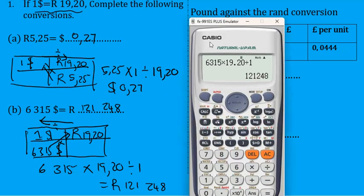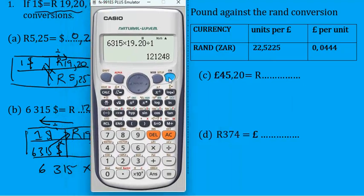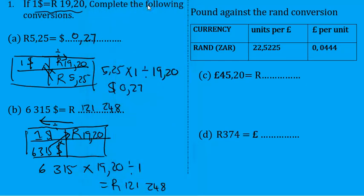In fact, let me show you: if we take 1 and put it over 22.5225, you'll see that we'll get the number in the last column, because the two columns are just the opposite of one another. For one, you present rands per pound; for the other, you present pounds per rand. So I'm gonna use the first column first.